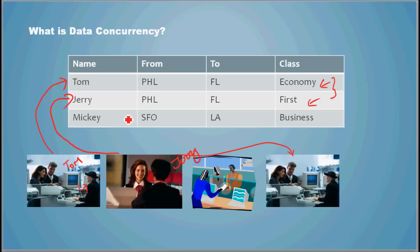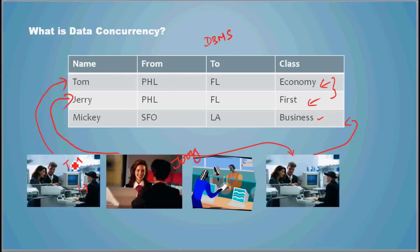Around the same time, another officer has a passenger called Mickey traveling from San Francisco to LA in business class. What happens here is the database management system has the ability to allow these multiple users to concurrently work with the data. That's called data concurrency.